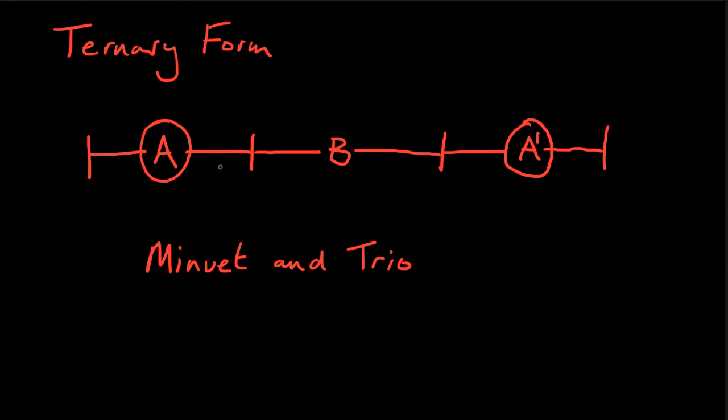It might be a change of time signature. We'll get this thing called the trio and it is a real contrast to the minuet and that would be our B section material. And then after we've heard that, often with repeats so we'll hear some of the ideas a few times, we end up going back and hearing the minuet again.